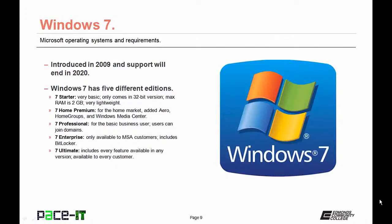The basic edition is 7 Starter, which only comes in a 32-bit version. The maximum RAM supported is two gigabytes, but it is very lightweight — good for netbooks and tablets. 7 Home Premium was for the home market, adding Aero to the desktop, Home Groups as an easier networking method, and Windows Media Center.